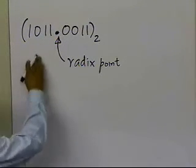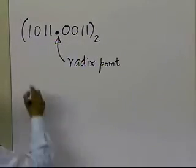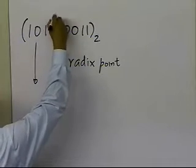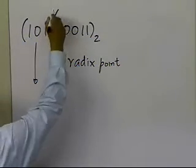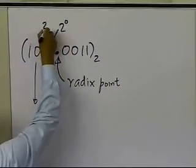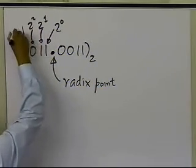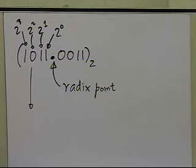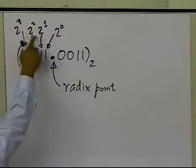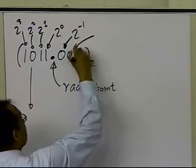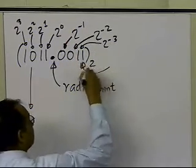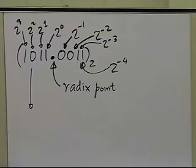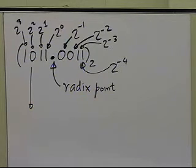Now, to find the equivalent of this binary number, I look at the placement of each digit. Just like in decimal notation the rightmost integer digit had place 10 to the power 0, here it will be 2 to the power 0. Moving left: 2 to the power 1, 2 to the power 2, 2 to the power 3. After the radix point: 2 to the power minus 1, minus 2, minus 3, and minus 4. The placements are very similar to decimal — there's not much difference between the two.